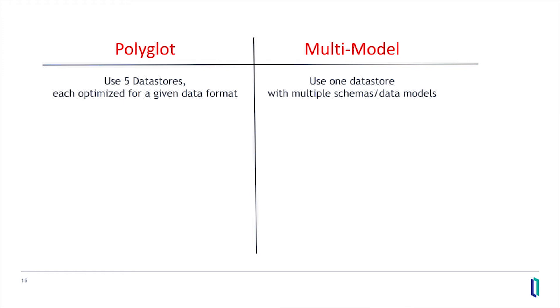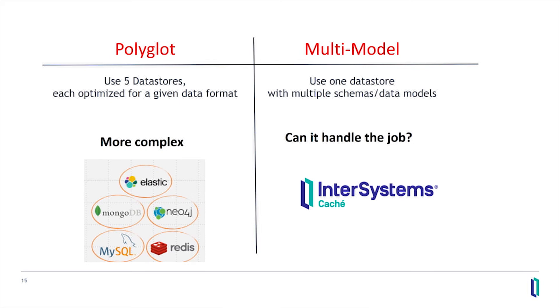At a high level, it's really simple: if you've got five different things, it's more complex. If you've got one thing, it's less complex — but the question is, can it actually do the job? What are you giving up? I'll walk through different elements of that.